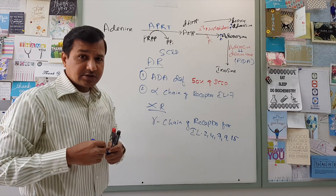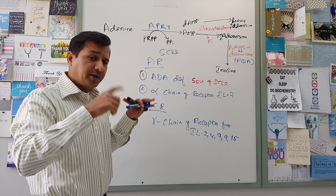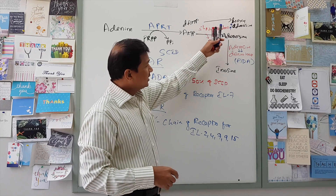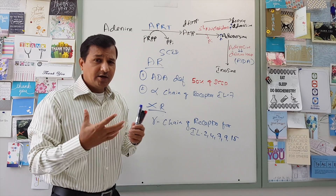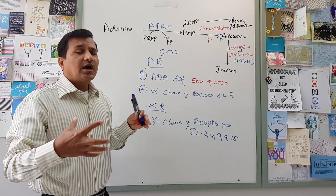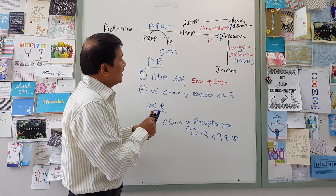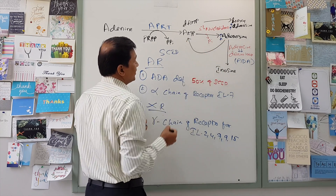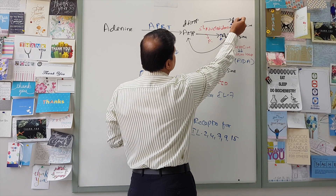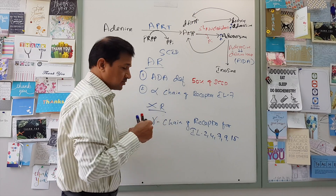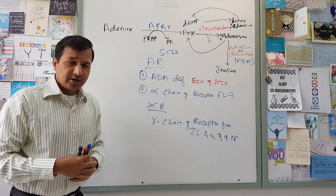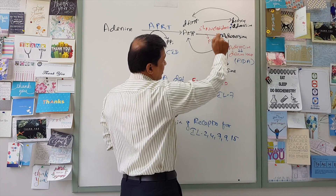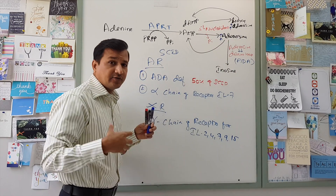Adenosine and deoxyadenosine are the only nucleoside molecules that can be directly phosphorylated. Adenosine is phosphorylated into AMP by adenosine kinase, and deoxyadenosine is phosphorylated into deoxyadenosine monophosphate by deoxyadenosine kinase. So when adenosine and deoxyadenosine are elevated due to ADA deficiency, there is a corresponding increase in AMP and deoxyadenosine monophosphate.